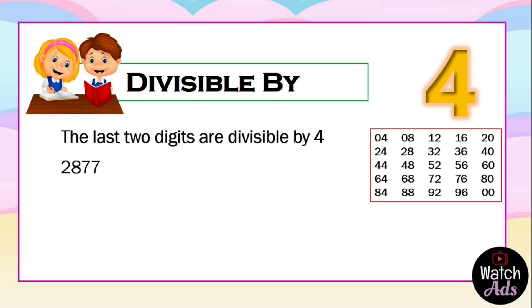In order for a number to be divisible by 4, the first criteria is it should be even. An even number ends in 0, 2, 4, 6, and 8. 2,877 ends in 7, which means that it is an odd number. Therefore, it is not divisible by 4.